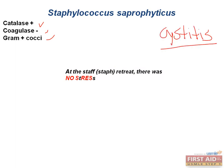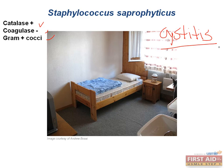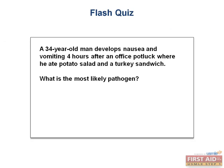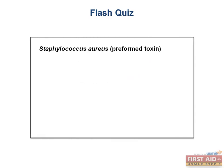Cystitis caused by staph saprophyticus is often called honeymoon cystitis because of its relation to sexual activity. Flash quiz: a 34-year-old man develops nausea and vomiting four hours after an office potluck where he ate potato salad and a turkey sandwich — what is the most likely pathogen? The answer is Staphylococcus aureus. This bug has a preformed toxin; the key clues are the types of food (mayonnaise-containing dishes) and the time course of four hours.